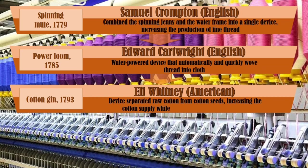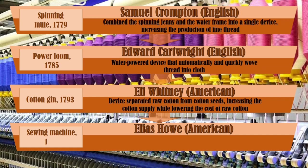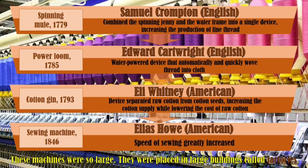Next is the cotton gin in 1793 by Eli Whitney, an American. This device separated raw cotton from cotton seeds, increasing the cotton supply while lowering the cost of raw cotton. And last was the sewing machine in 1846 by Elias Howe, an American. These machines were so large that households could no longer accommodate them, so they were placed in large buildings called factories.